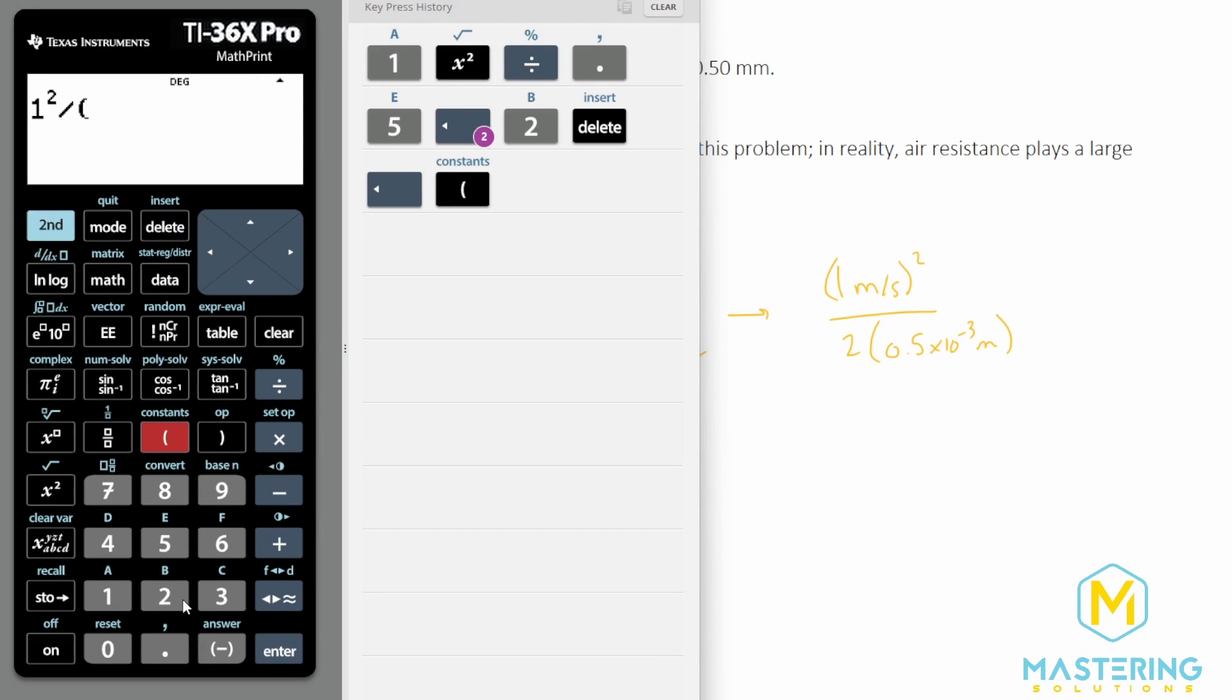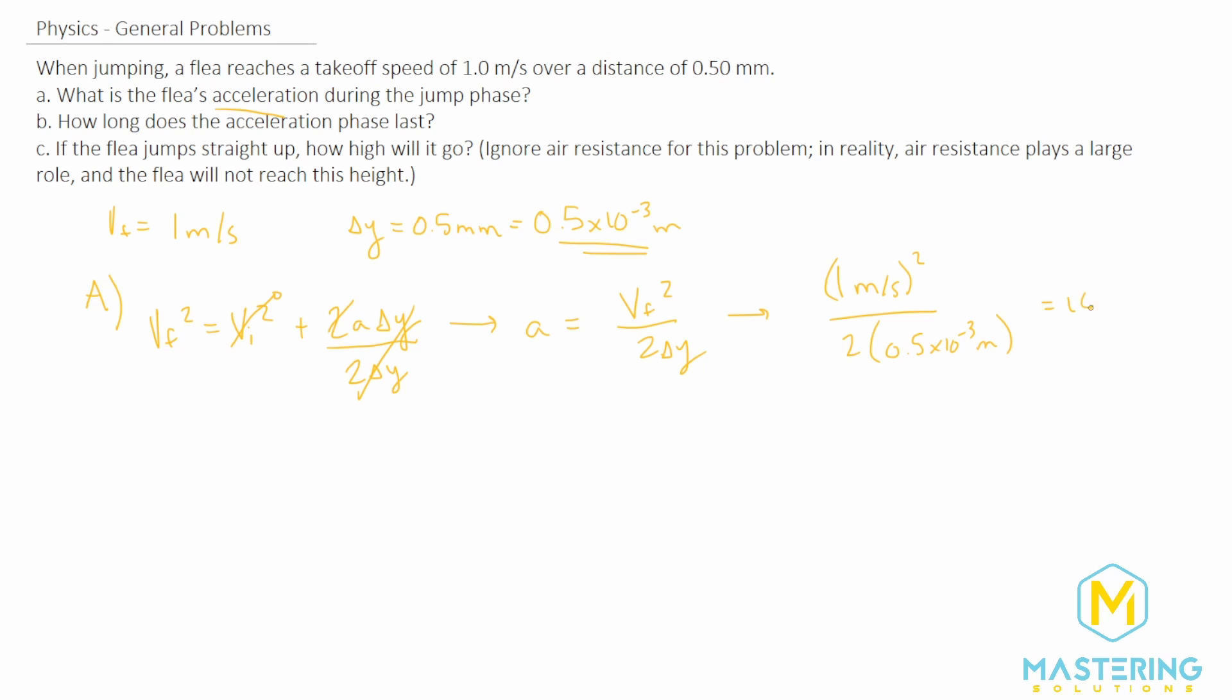So we have 1 squared, which is the same as 1, divided by 2 times 0.5 times 10 to the negative 3, which gives us an acceleration of 1,000 meters per second squared. So there's our answer for part A.